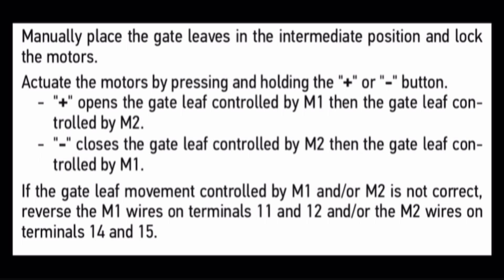Manually place the gate leaves in the intermediate position and lock the motors. Actuate the motors by pressing and holding the plus or minus button. Plus opens the gate leaf controlled by M1, then the gate leaf controlled by M2. Minus closes the gate leaf controlled by M2, then the gate leaf controlled by M1. If the gate leaf movement controlled by M1 and/or M2 is not correct, reverse the M1 wires on terminals 11 and 12 and/or the M2 wires on terminals 14 and 15.